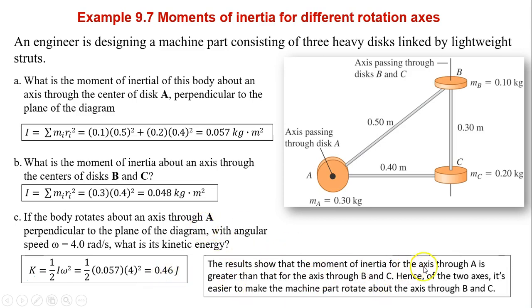The result showed the moment of inertia for the axis through A is greater than that for the axis through B and C. Hence, of the two axes, it's easier to make the machine part rotate about the axis through B and C instead of A.